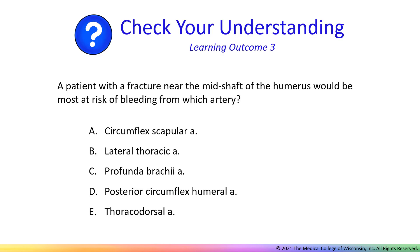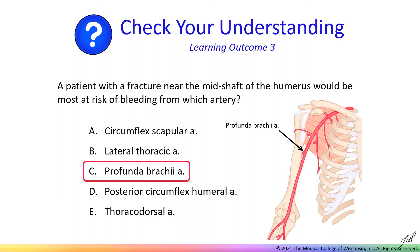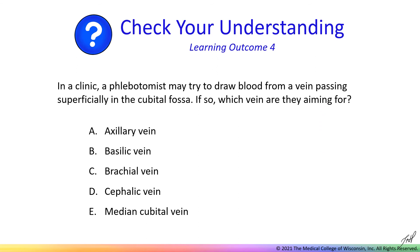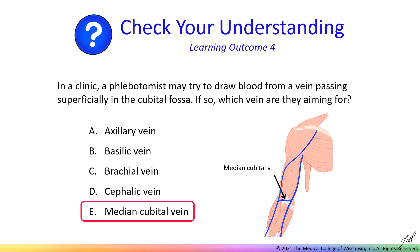Before we wrap up, let's pause to check your understanding. A patient with a fracture near the mid-shaft of the humerus would be most at risk of bleeding from which artery? Feel free to pause the video to think. The correct answer is C, the profunda brachii artery, which branches off the brachial artery and travels closely along the shaft of the humerus posteriorly to supply the posterior compartment of the arm. For the last question: in a clinic, a phlebotomist may try to draw blood from a vein passing superficially in the cubital fossa — which vein are they aiming for? The correct answer is the median cubital vein, which lays just deep to the skin in the inner elbow.